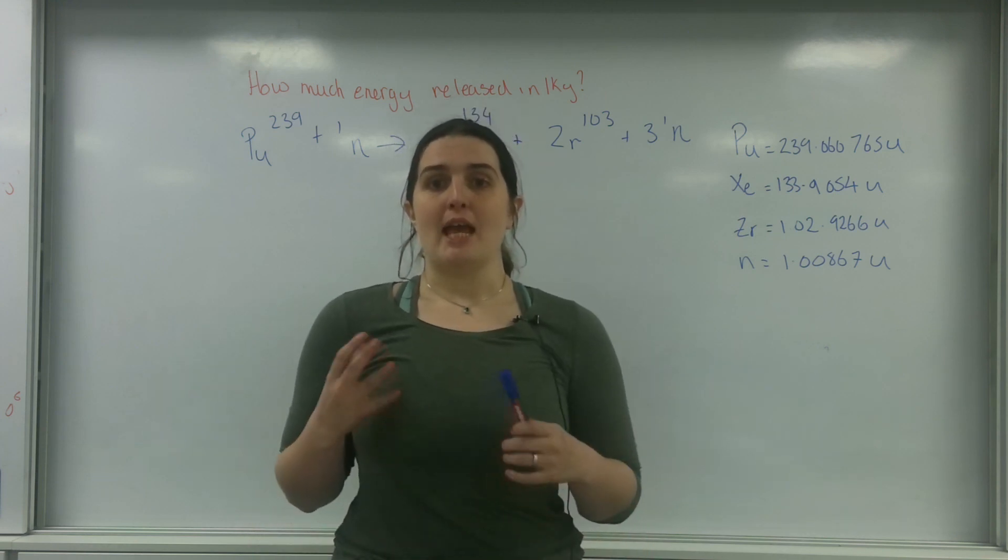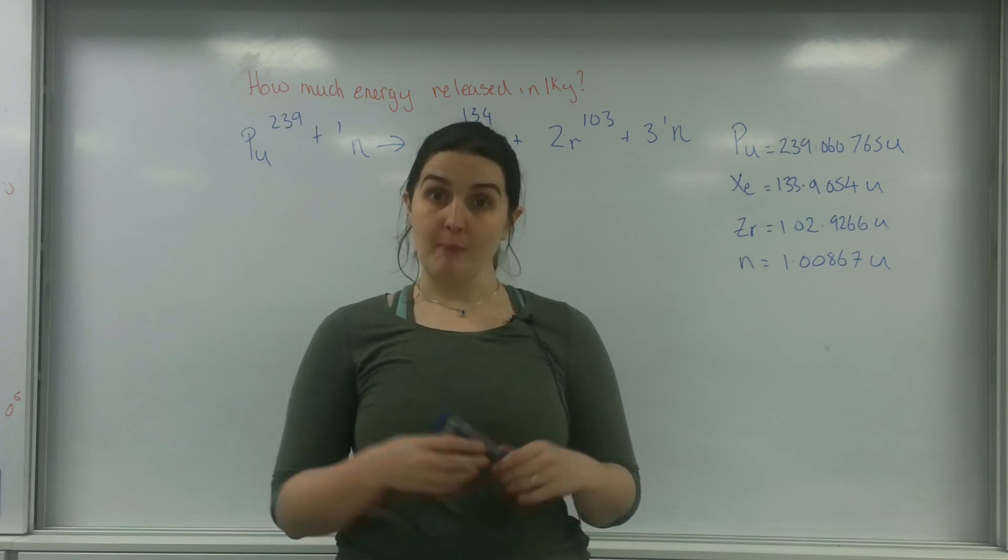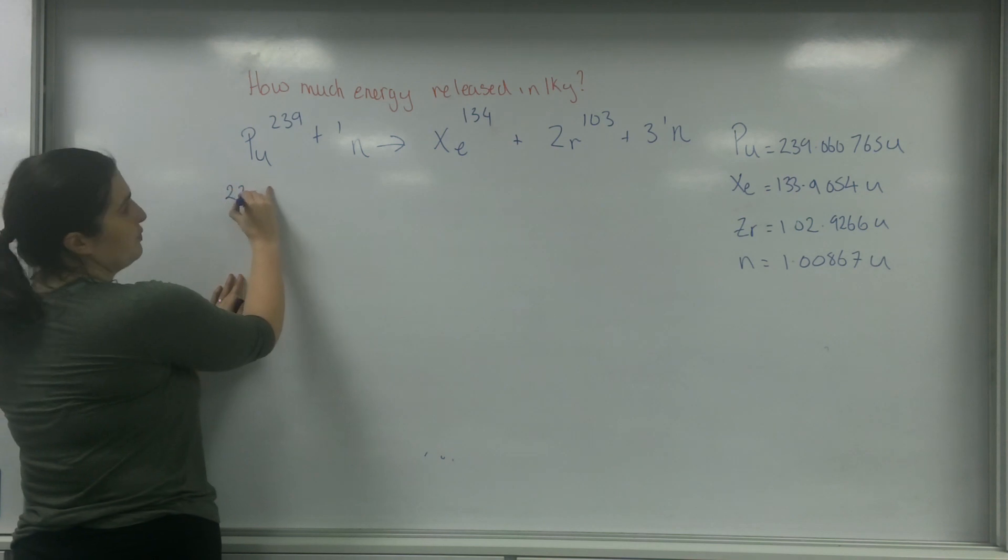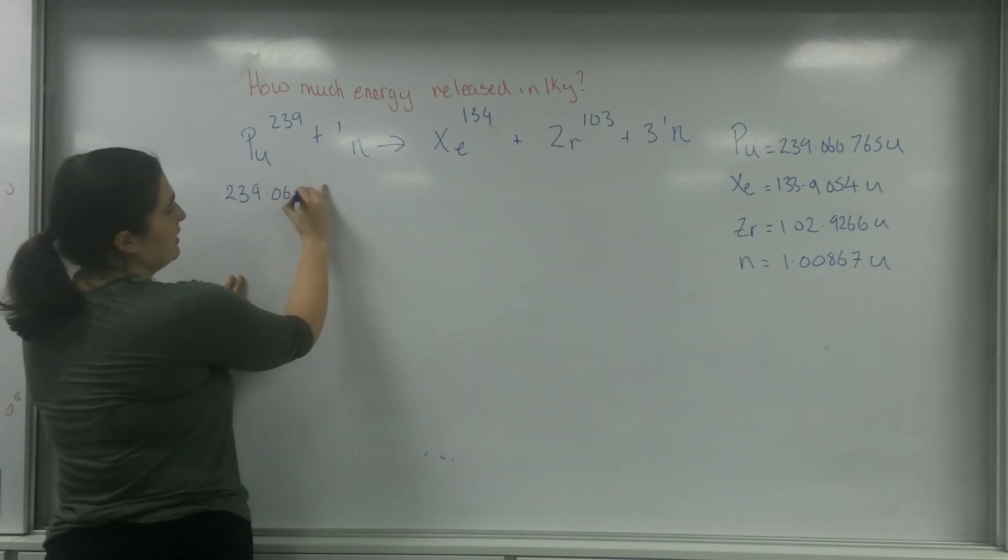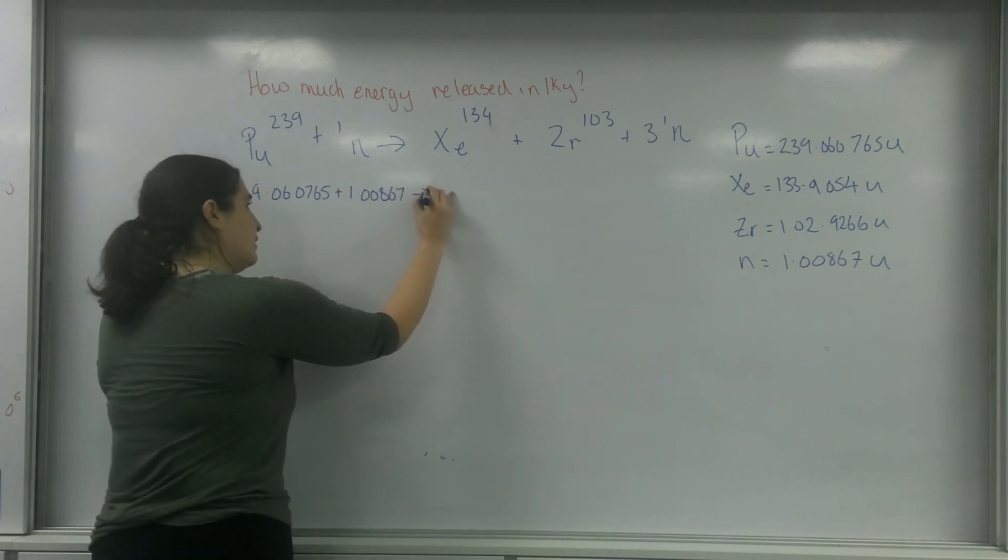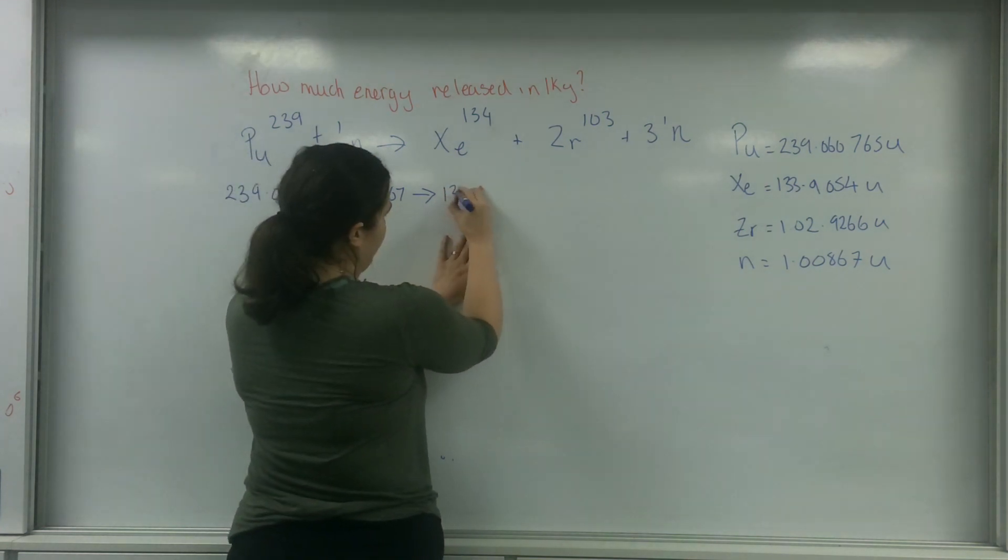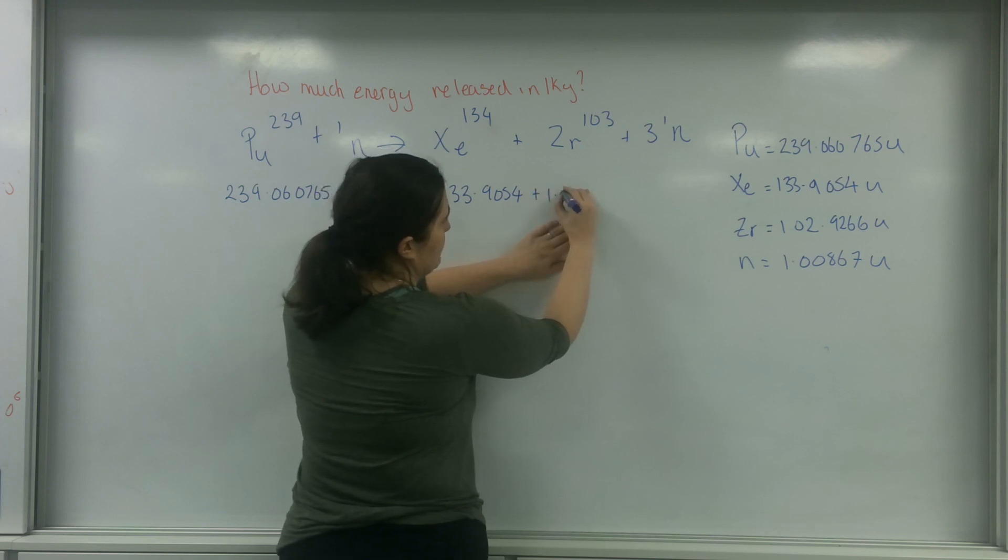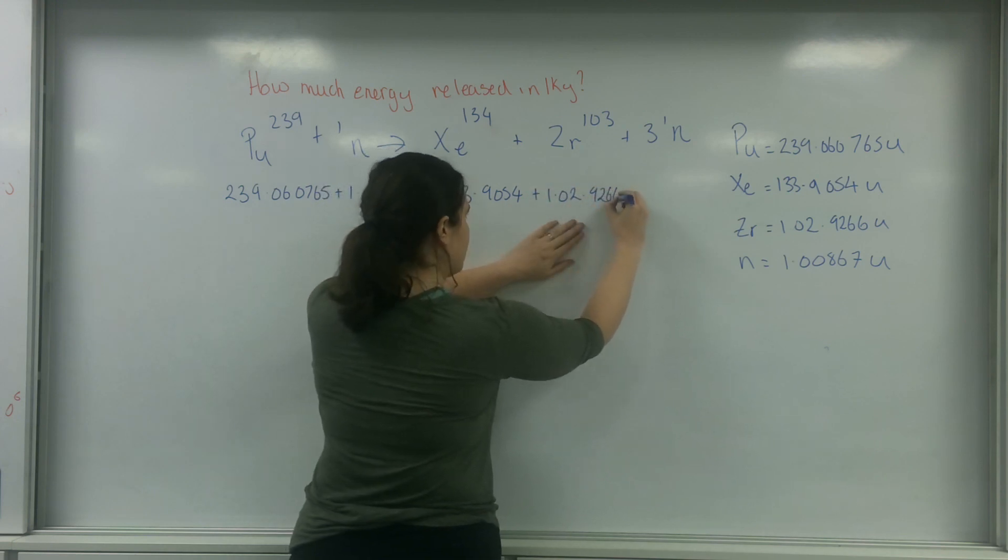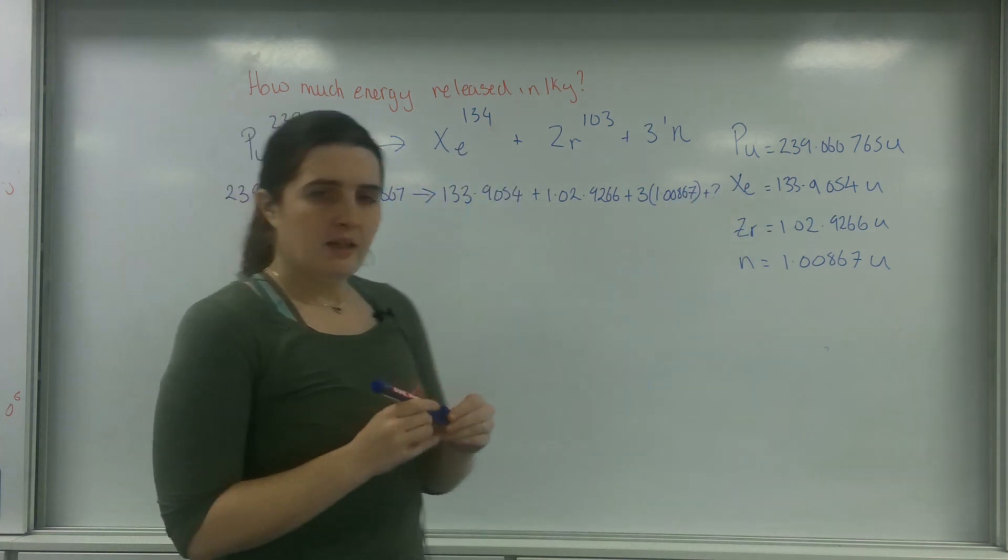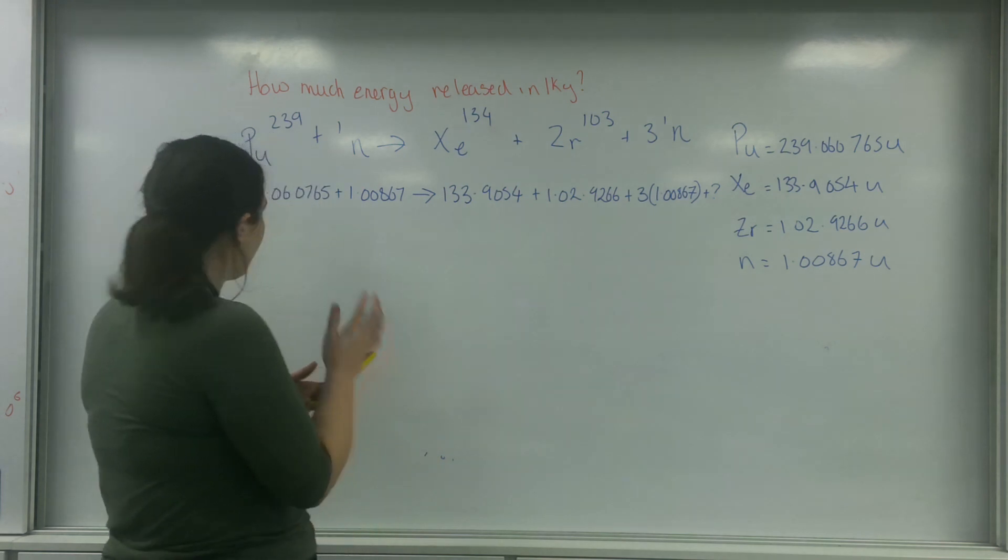The first thing I want to work out is how much energy is released in one reaction, and I do that by finding the mass deficit. So I've got 239.060765 plus 1.00867 goes to 133.9054 plus 102.9266 plus 3 times 1.00867 plus my question mark. I'm going to simplify this down.